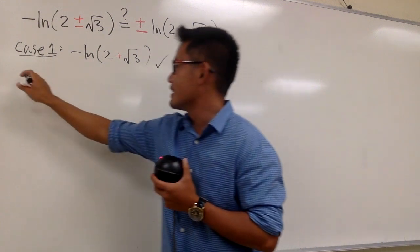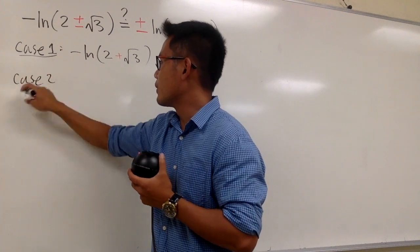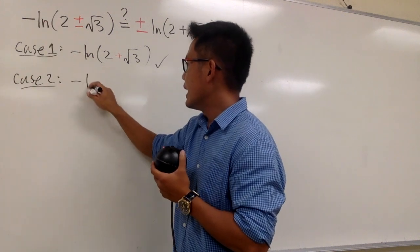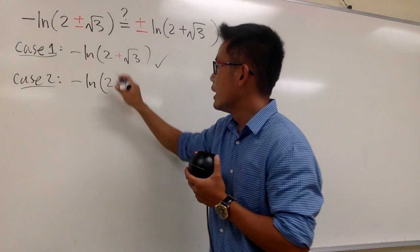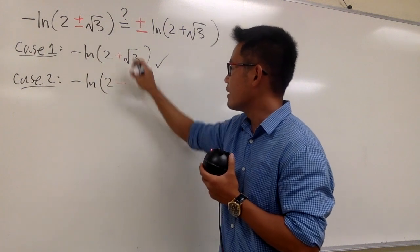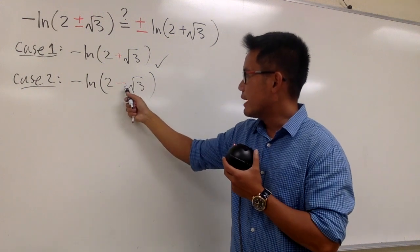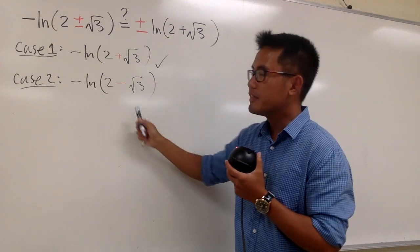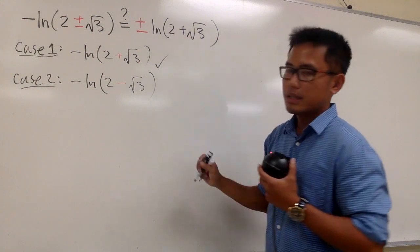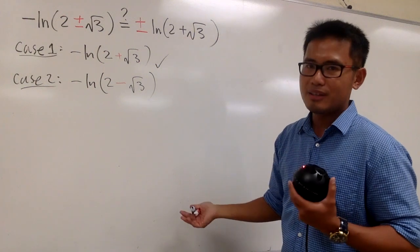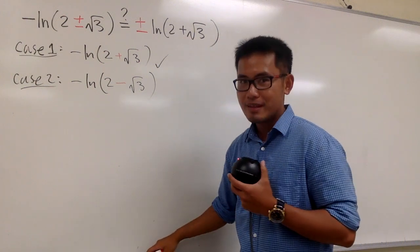Now here is the second case. Here we go. Negative ln parentheses 2, and we have the minus right here, and then square root of 3. This is 2 minus square root of 3 inside. This is definitely not the same as that, and maybe somehow we can make it the same. So here we go. Let's see how we can do that.